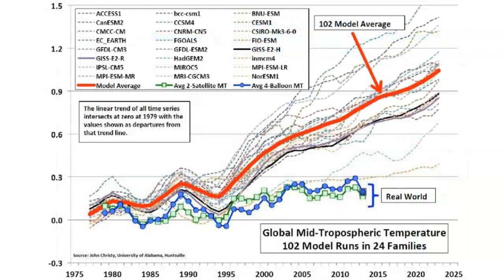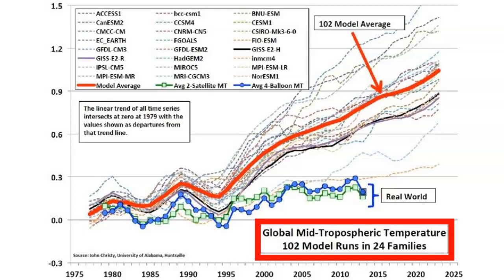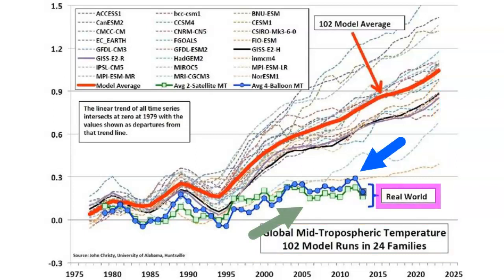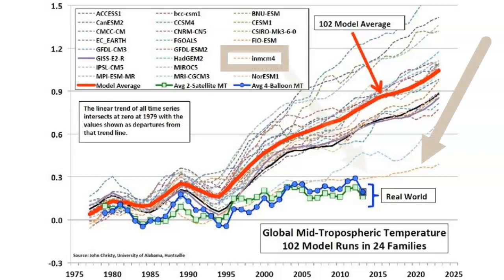This graph plots the 24 major groups of climate models which contain the 102 separate models. As before, the thick red line is the average plot of the 102 climate models. Below, the green and blue lines are the satellite and weather balloon data — the real-world data. Now look at this tan line — it is the Russian model, and it is the most accurate model with respect to the real-world data.